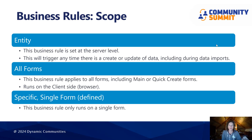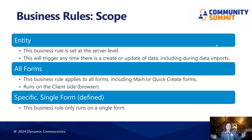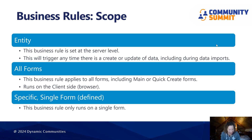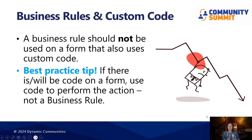Then we have all forms. I use all forms as my scope for most of my business rules, because this is running on the client side, which is inside the browser. This business rule will apply to all forms, including your main forms or your quick create forms. Finally, you have your single form, which you would specify — so that business rule will only run on the specified form for the table. Once you have applied your scope, we can dive into creating your business rule.